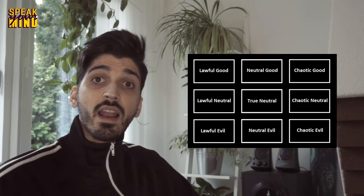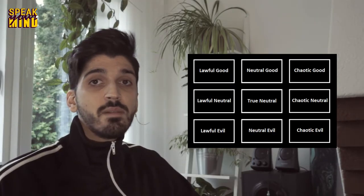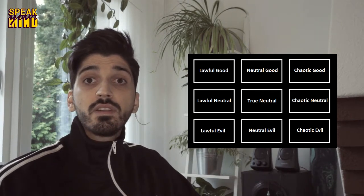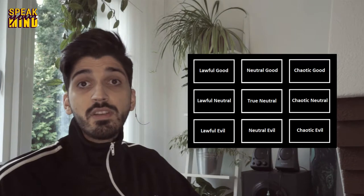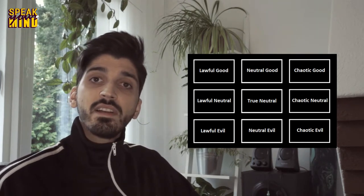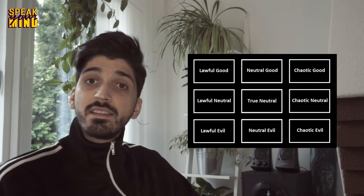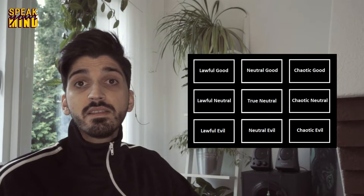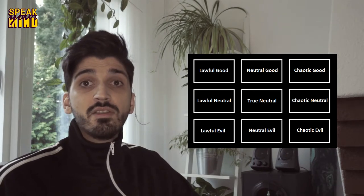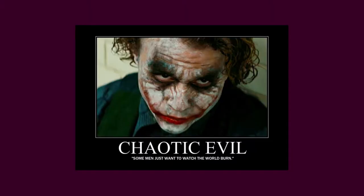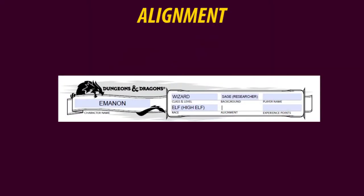Then we have to decide upon an alignment for our character. Some people ignore this fully, as they simply feel it's useless or difficult to implement into the gameplay. But personally, I love playing with alignments. It gives an extra edge to the character and adds an extra dynamic when it comes to roleplaying. The alignment gives a hint of a character's attitude towards life. To fit my character concept, Emanon will be true neutral.